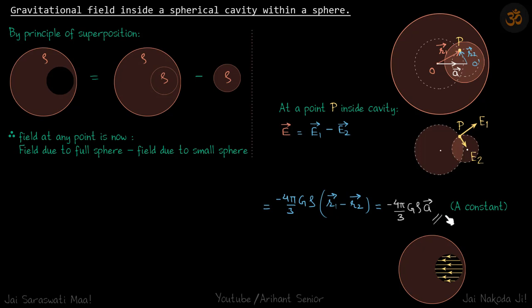It's independent of the position inside the cavity, independent of r1 and r2. Inside the cavity at any point, field is constant and it only depends on the distance between the center of the sphere and the cavity's center.